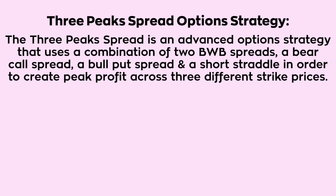The three-peak spread is an advanced option strategy that uses a combination of two broken wing butterfly spreads, a bear call spread, a bull put spread, and a short straddle, in order to create peak profit across three different strike prices.